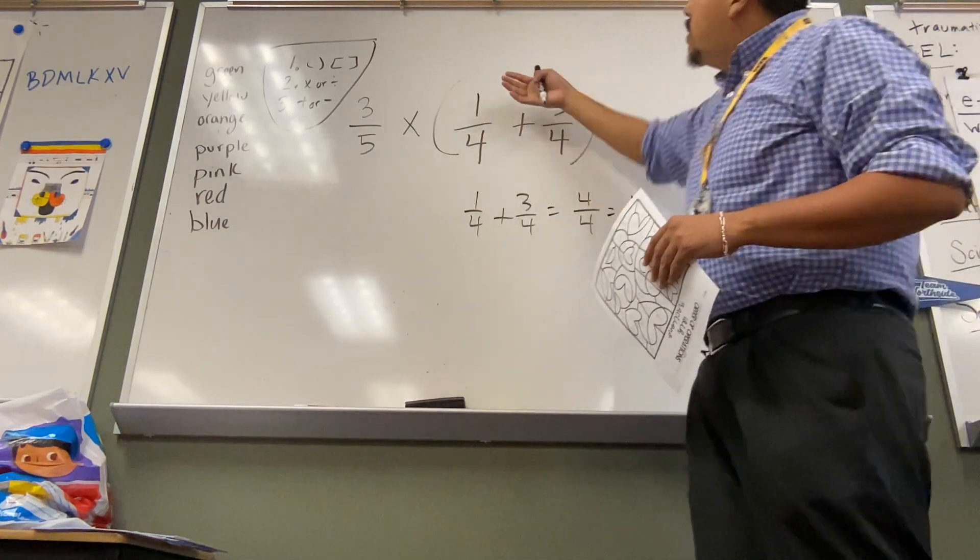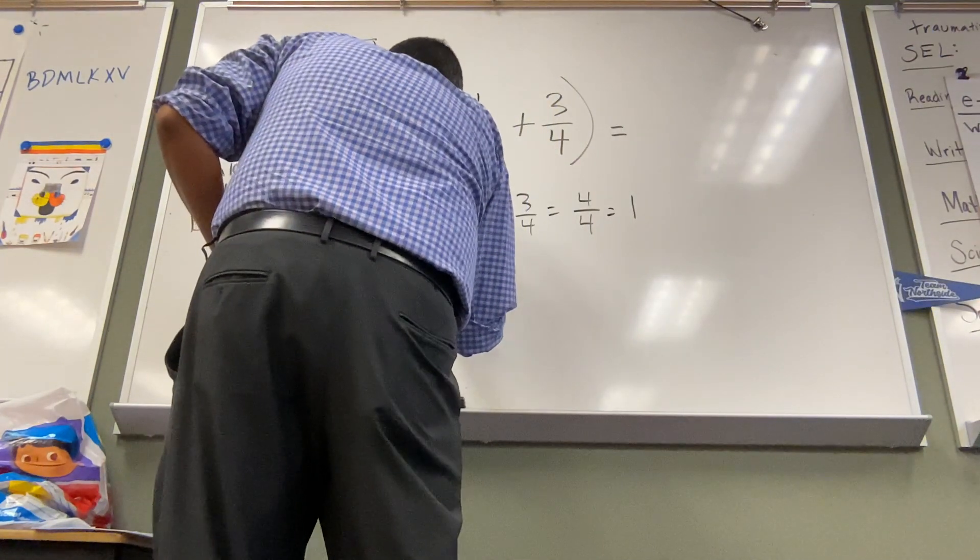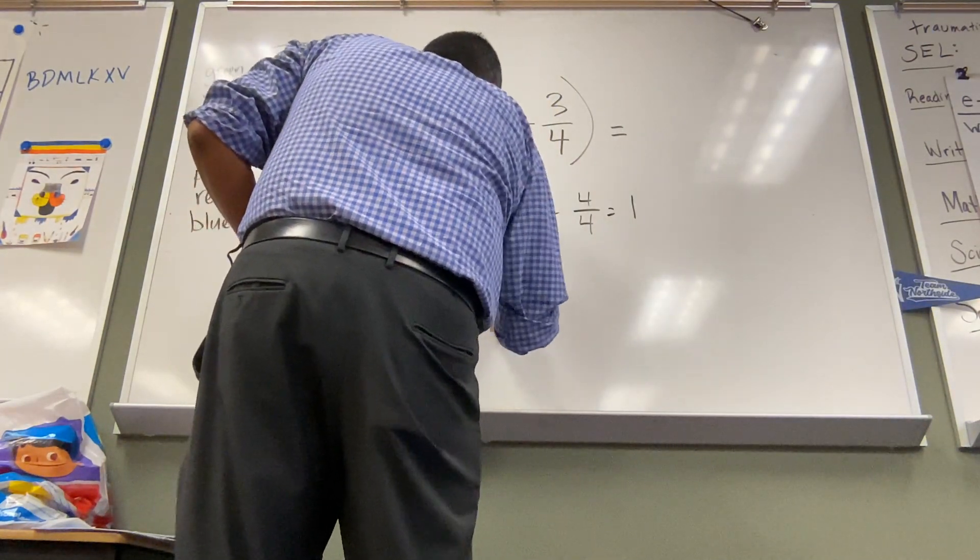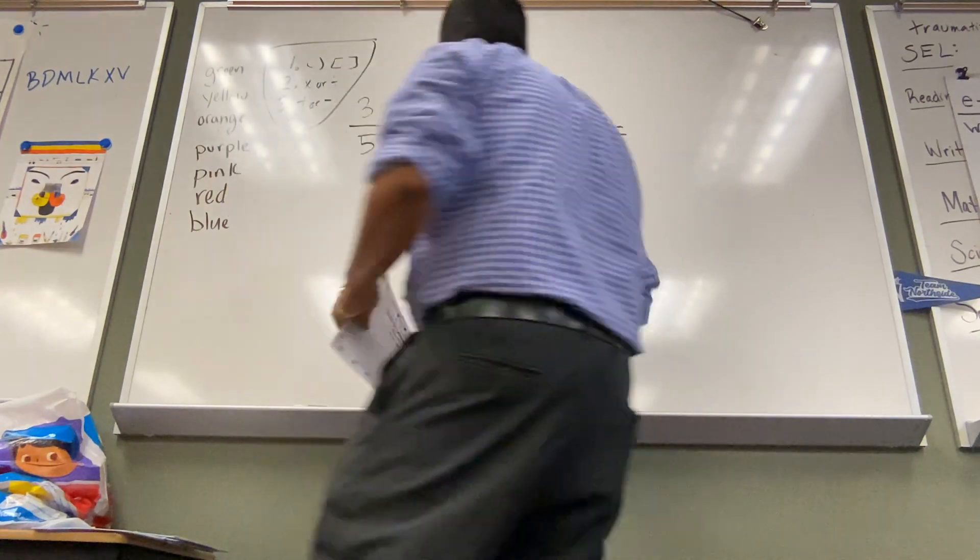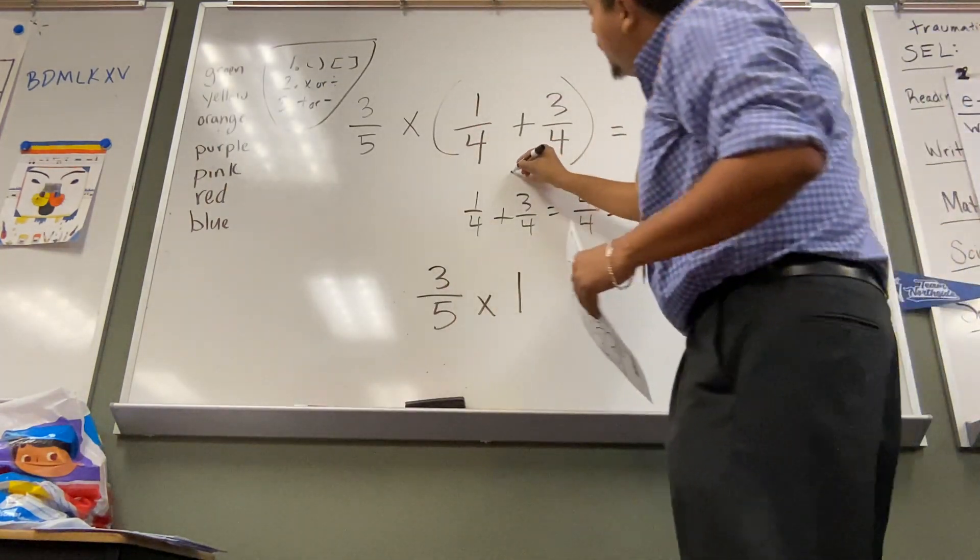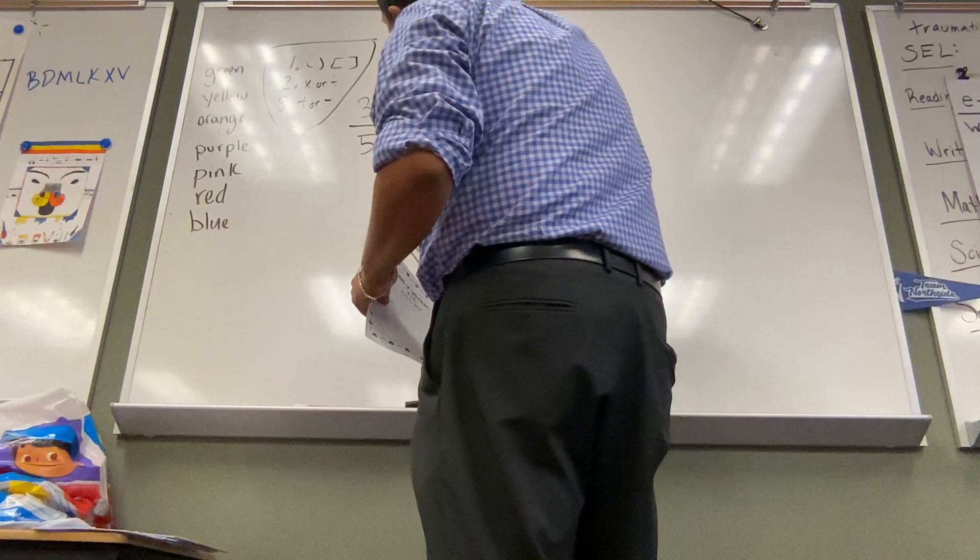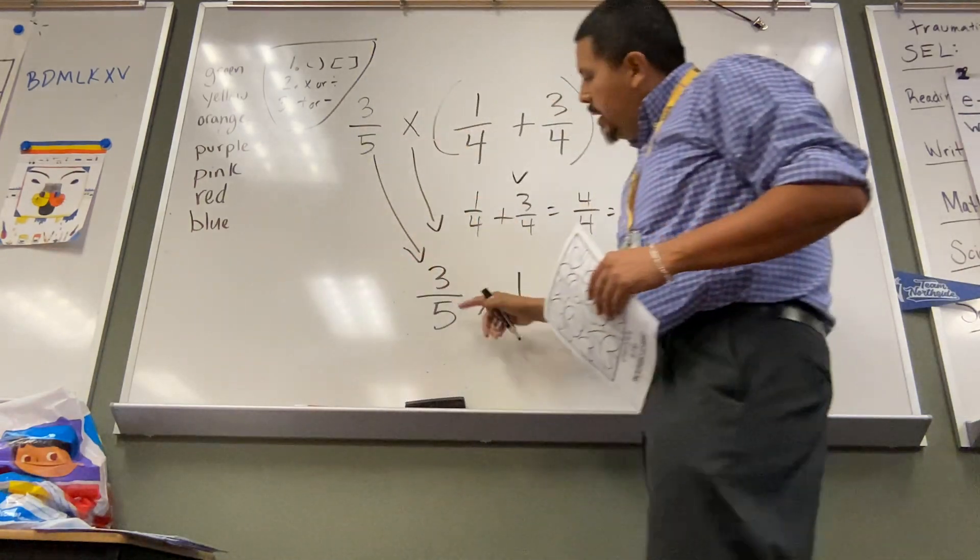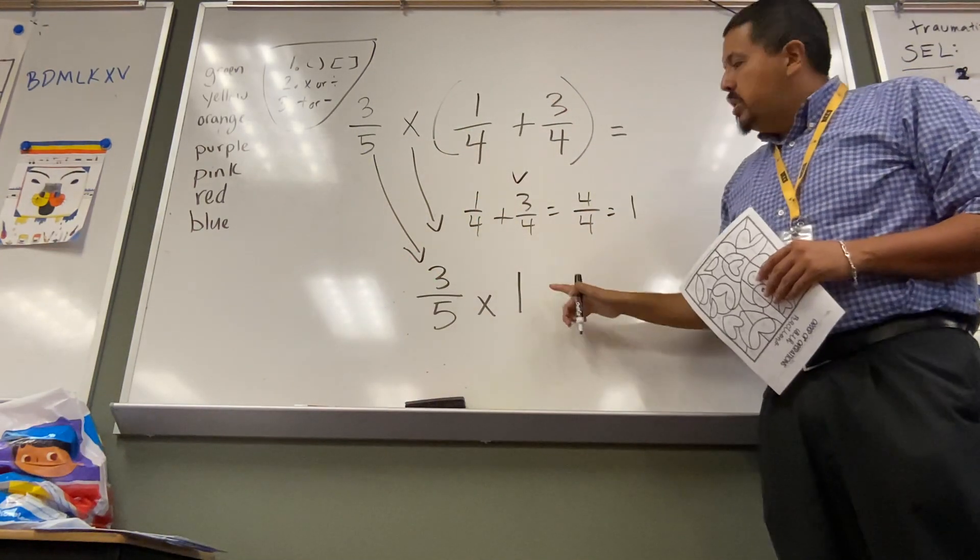Awesome, my friends. So I'm going to work all my work down. I am going to put three-fifths times one. Yes, I already solved this. This is me solving it right here. I'm going to bring everything down. And I put it together with my solution, which is one.